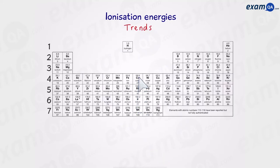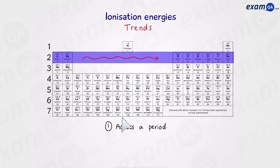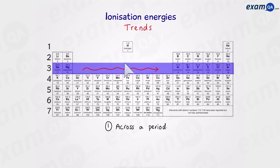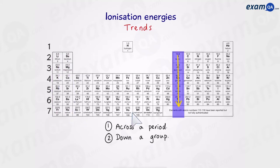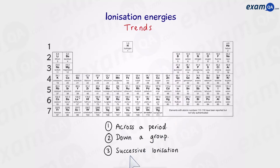Questions involving ionization energies have a lot to do with trends in the periodic table. There are three main trends that we have to learn about. The first are trends across a period, for example across period two or period three. The second are trends down groups, such as down group one, group two, group three. And the third type involves successive ionization energies.